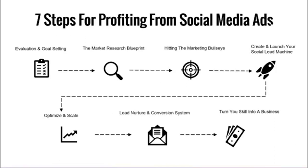Step one is evaluation and goal setting — figuring out what the client's goals are, intaking and figuring out where they're at and where they want to go. A lot of this is done on that sales call. Step two is the market research blueprint, which is looking at the competition. You never market in a vacuum — there's always going to be competition. You go out, see what other people are doing in the market, what things are doing right and wrong.